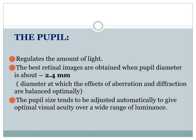The pupil is an opening in the iris which regulates the amount of light entering the eye. The best retinal image is obtained when the pupil diameter is about 2.4 mm, which balances aberration and diffraction. Pupil size tends to be adjusted automatically to maintain optimum visual acuity over a wide range of luminance.